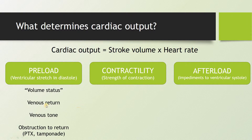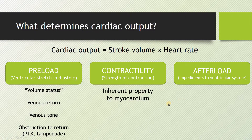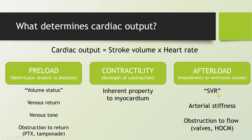When we think about preload, the contributing factors are: volume status, rate of venous return, venous tone — veins can constrict and the more they squeeze, the more blood they bring back to the heart — and obstruction to return. In obstructive forms of shock like pneumothorax or tamponade, blood is restricted from making it back to the heart, decreasing preload. Afterload is any impediment to ventricular systole, including systemic vascular resistance, arterial stiffness, and obstructions like a bad aortic valve or hypertrophic cardiomyopathy.